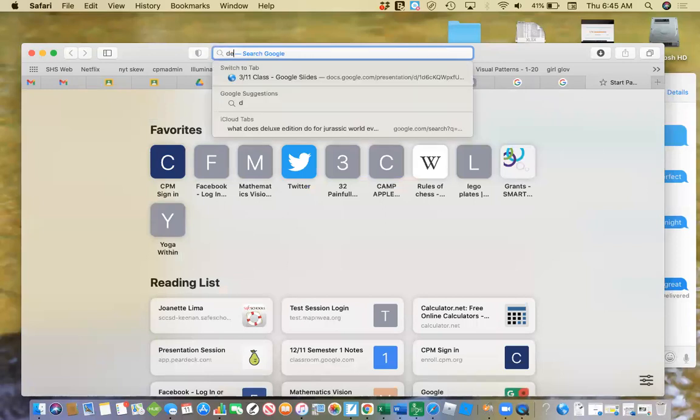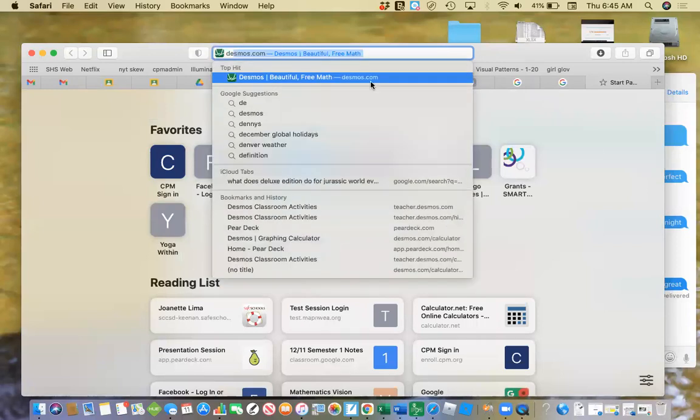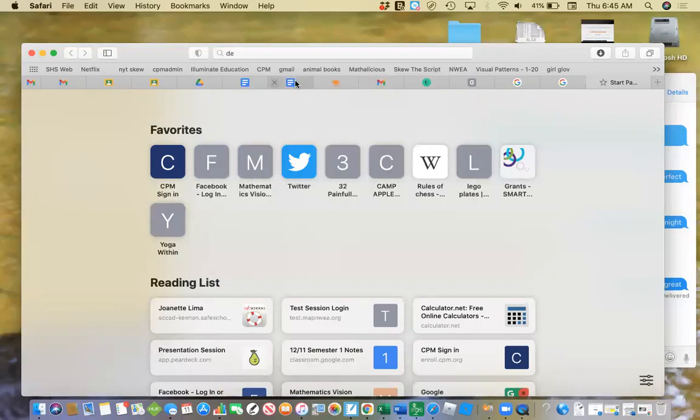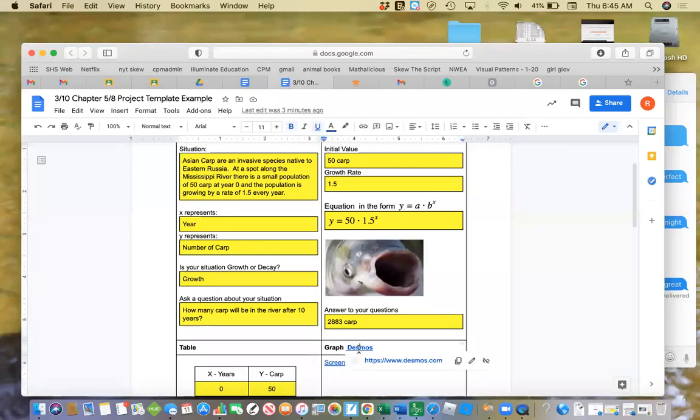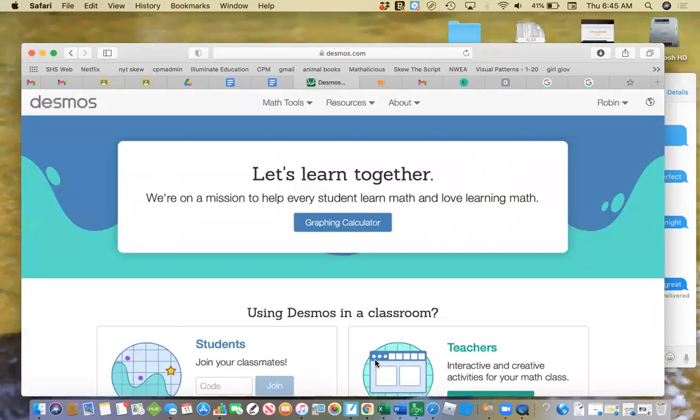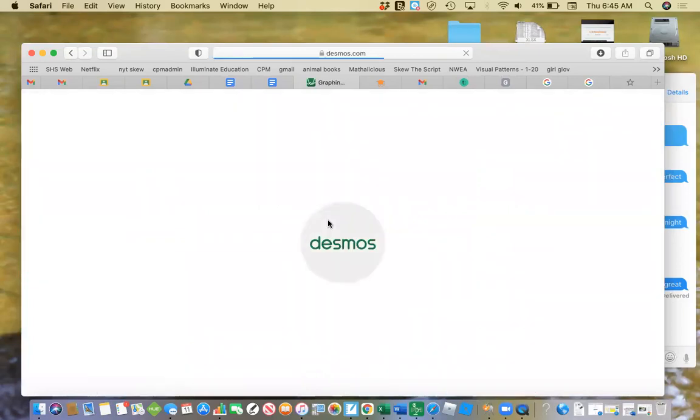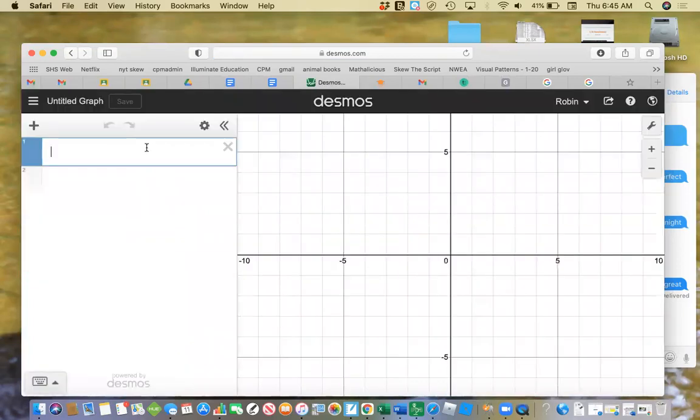So you'll want to open up a Desmos link. Right here on the doc, there's the link that will take you to Desmos. Click graph calculator and you want to type in your value.